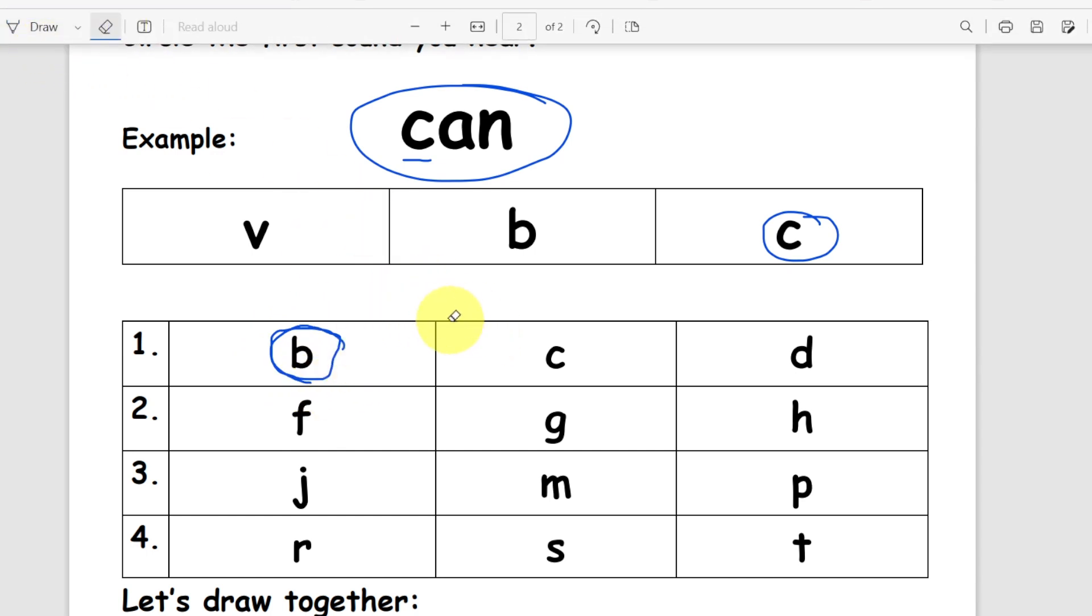Now I'm not gonna help you for the other ones, okay? You gotta circle it by yourself. Number two. Hill. What is the first sound of hill? Which one is it? Number three. Jam. Number four. Sad. Number four is sad. All right, great job.